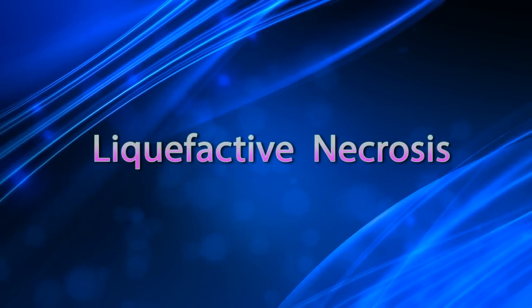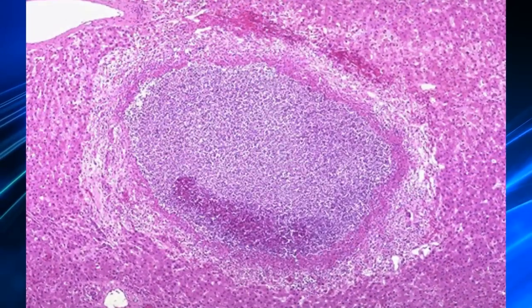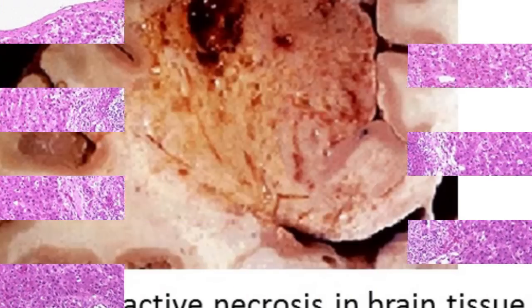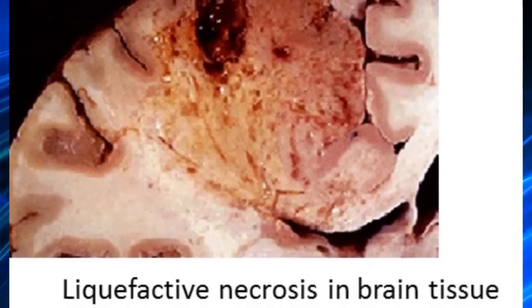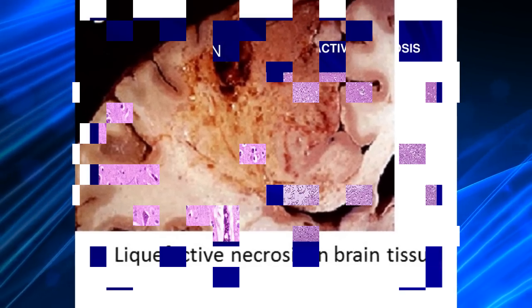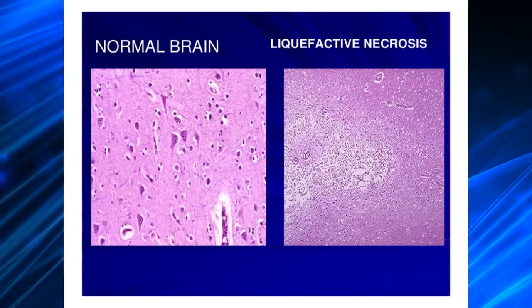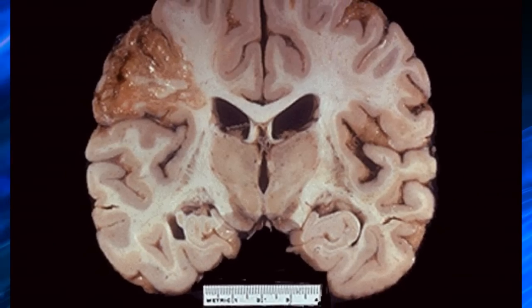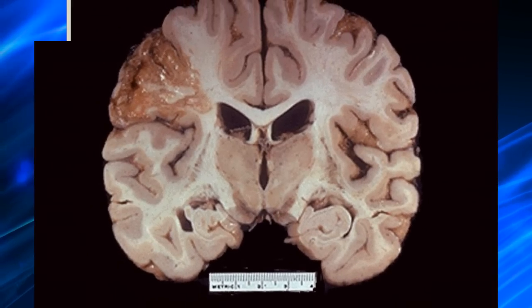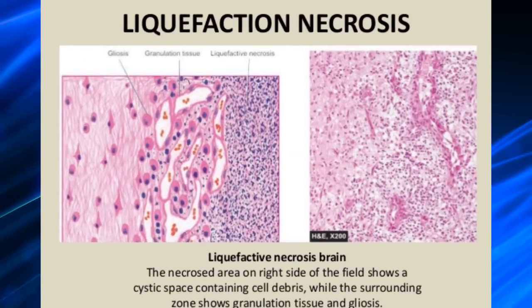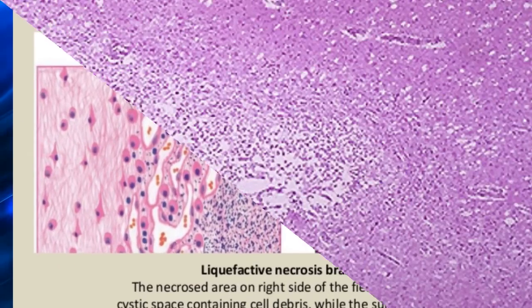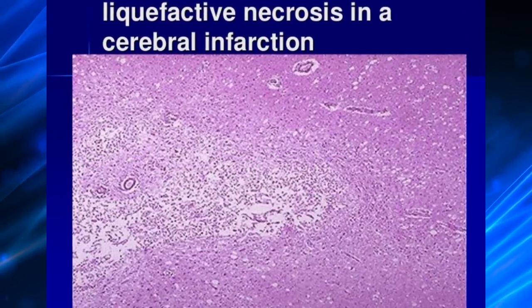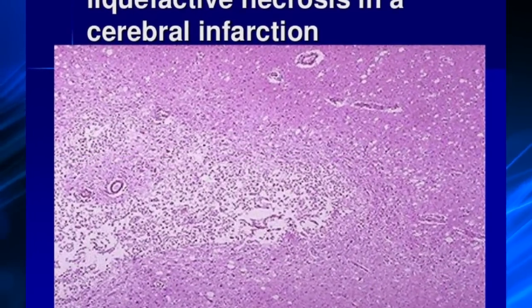In liquefactive necrosis, the dead cells are completely digested, transforming the tissue into a liquid viscous mass. Eventually the digested tissue is removed by phagocytes. Liquefactive necrosis is seen in focal bacterial or occasionally fungal infections, because microbes stimulate the accumulation of inflammatory cells and the enzymes of leukocytes.